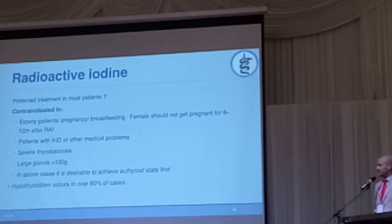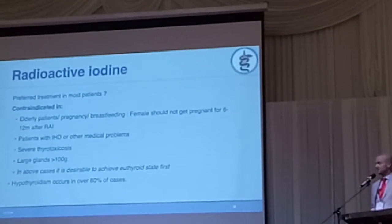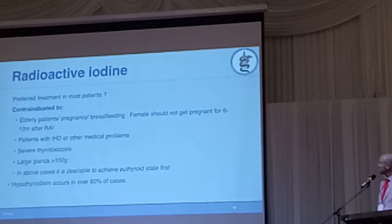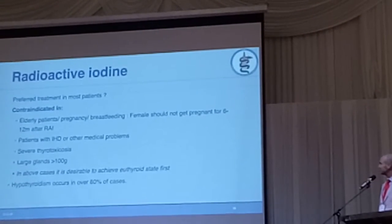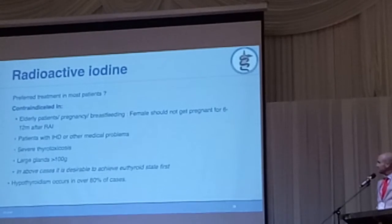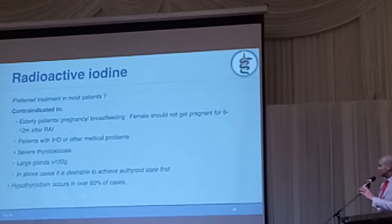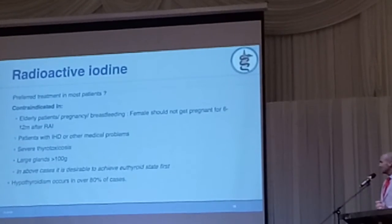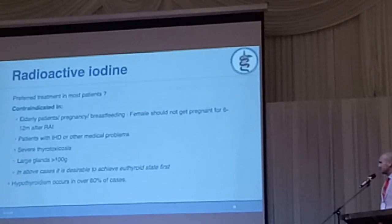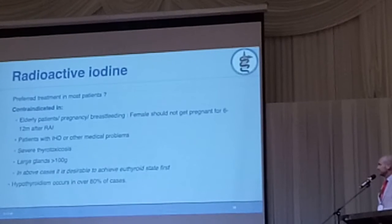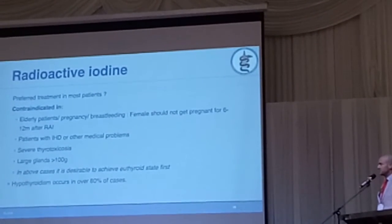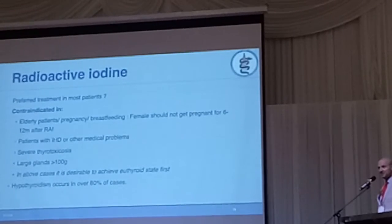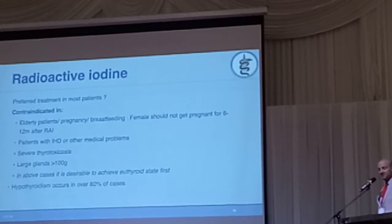Radioactive iodine — preferred treatment in most patients, question mark. It's contraindicated in elderly patients, pregnant patients, and breastfeeding patients, patients with other medical problems, severe ophthalmopathy, or large glands. In all these cases, we would prefer surgery. Hypothyroidism after Graves' treatment with radioactive iodine occurs in 80% of cases — you should counsel your patient about it.